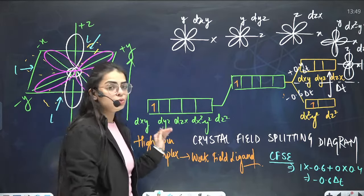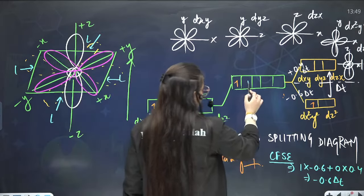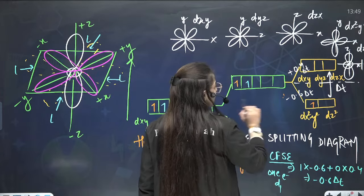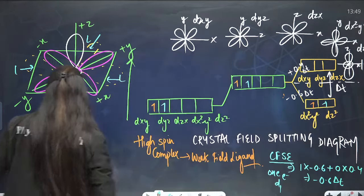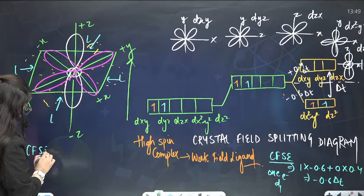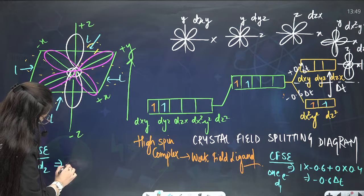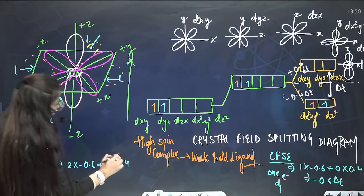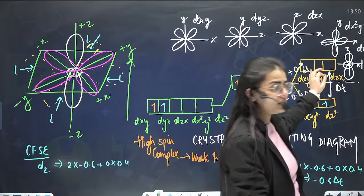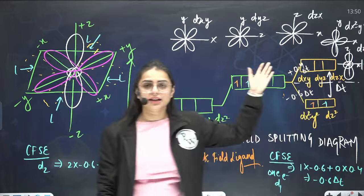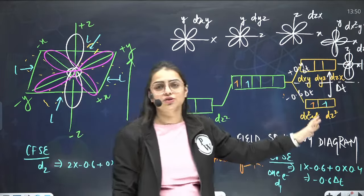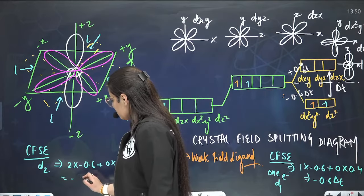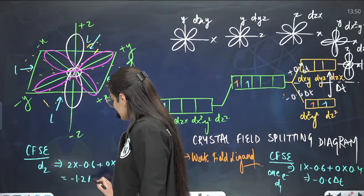For d2 — two electrons in the lower energy level — the CFSE value is: 2 × (−0.6 delta-T) + 0 × (0.4 delta-T) = −1.2 delta-T. For d3 — three electrons — since in tetrahedral we always have weak field ligand, there is no pairing. So two electrons go in the lower level and one goes to the higher level. CFSE = 2 × (−0.6 delta-T) + 1 × (0.4 delta-T) = −1.2 + 0.4 = −0.8 delta-T.